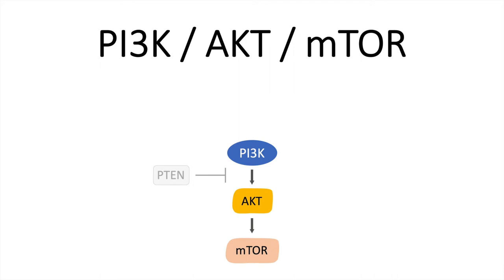We can see here that PI3K leads to the activation of AKT, and also here in the side branch we see that there is a protein called PTEN which can inhibit this activation of AKT. PTEN is a very well known and studied tumor suppressor gene, but for simplification we will just exclude it here.